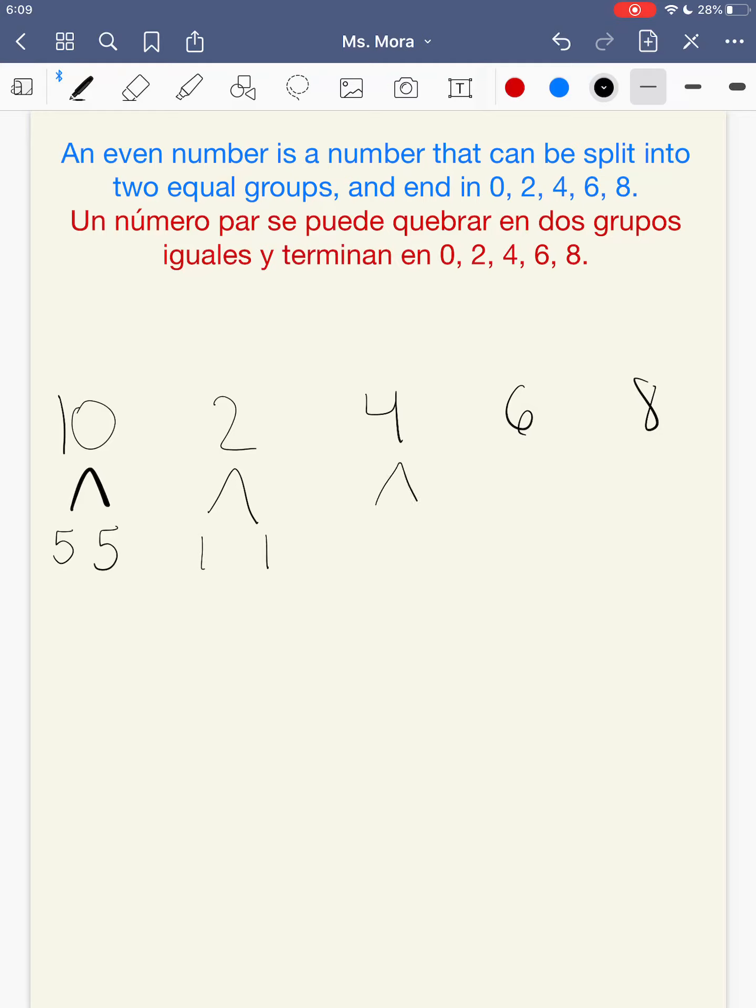4, I can split it up into two equal groups of 2 because 2 plus 2 is 4. 6, I can add two equal groups of 3. 3 plus 3 is 6. And 8, I can add two equal groups of 4 because 4 plus 4 is 8. So all of these numbers are even.